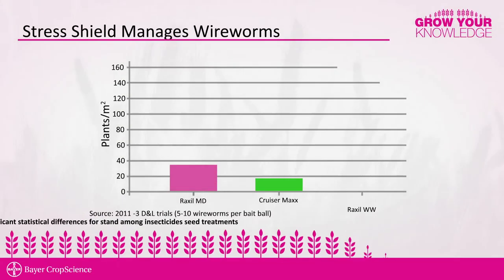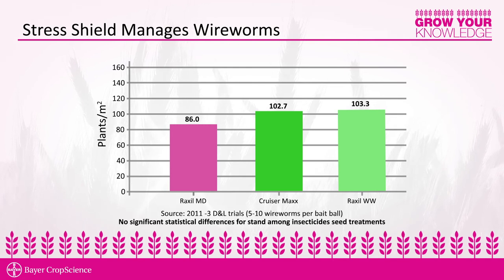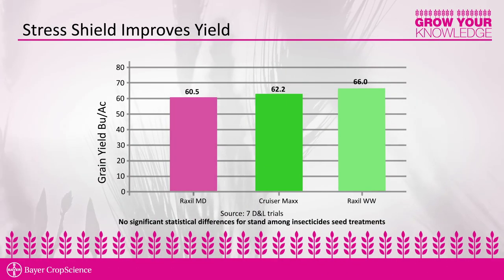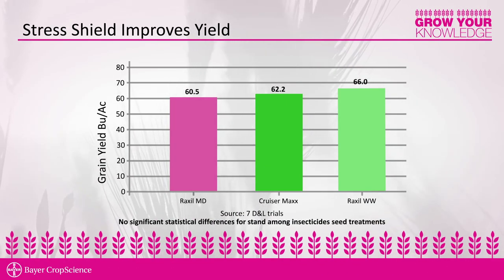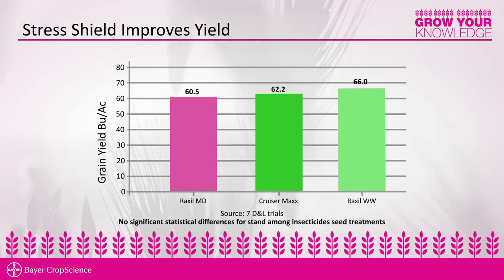So we've looked at laboratory studies that show the effect that Stress Shield has within the plant. We'll now look at some field trials to show you what type of benefit you can expect from putting Stress Shield on your crop. In addition to protecting your plant stand, Stress Shield will provide a yield increase if you have a wireworm infestation in your field. And what we've observed is that we get a greater yield increase with Stress Shield than we do with other neonic insecticides.